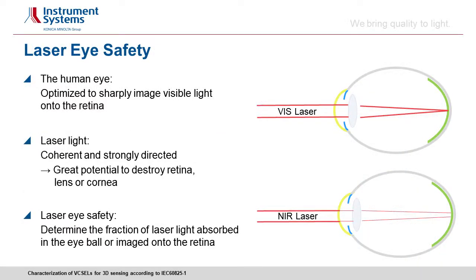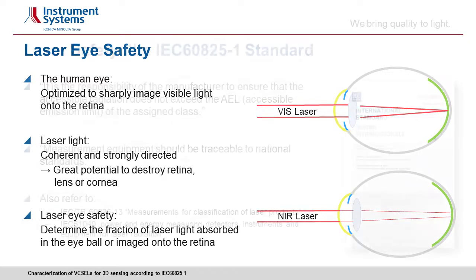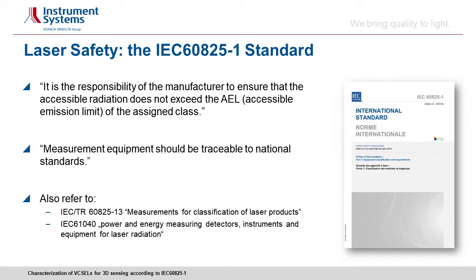Why is eye safety so important? The human eye is an optical system greatly optimized to sharply image visible light onto the retina. Laser light, which is coherent and strongly directed, has great potential to destroy the retina by causing high intensities on the retina and in the eyeball. Laser safety is all about how much energy is either absorbed in the eyeball or imaged onto the retina, and this is exactly what the IEC standard is all about.